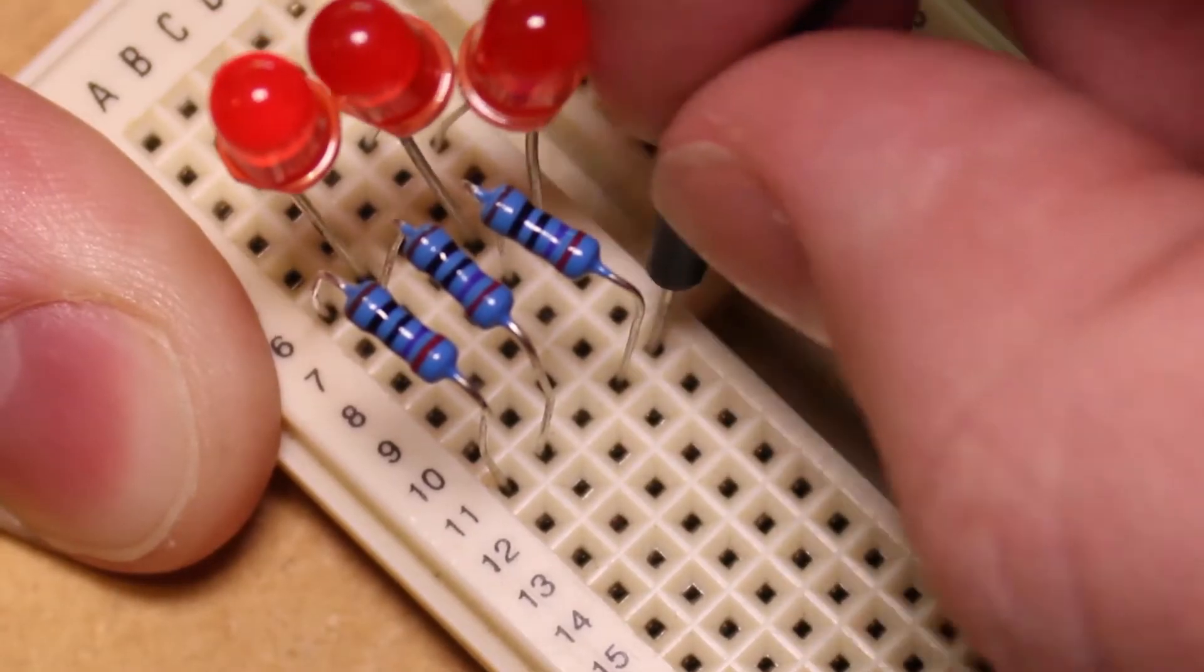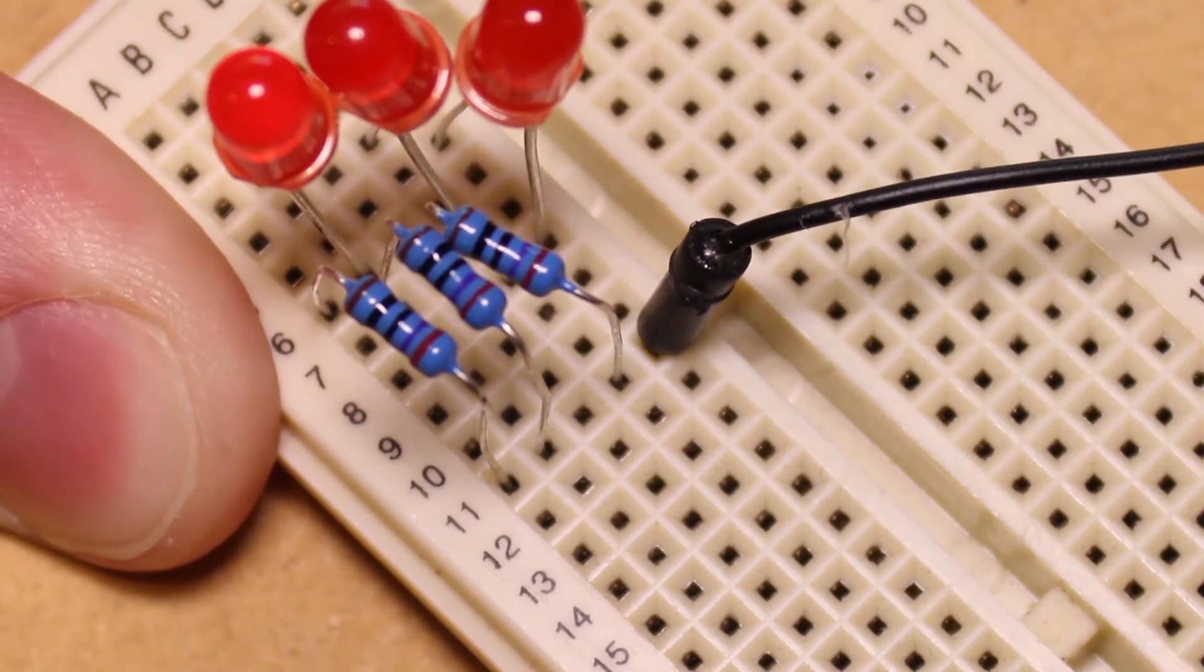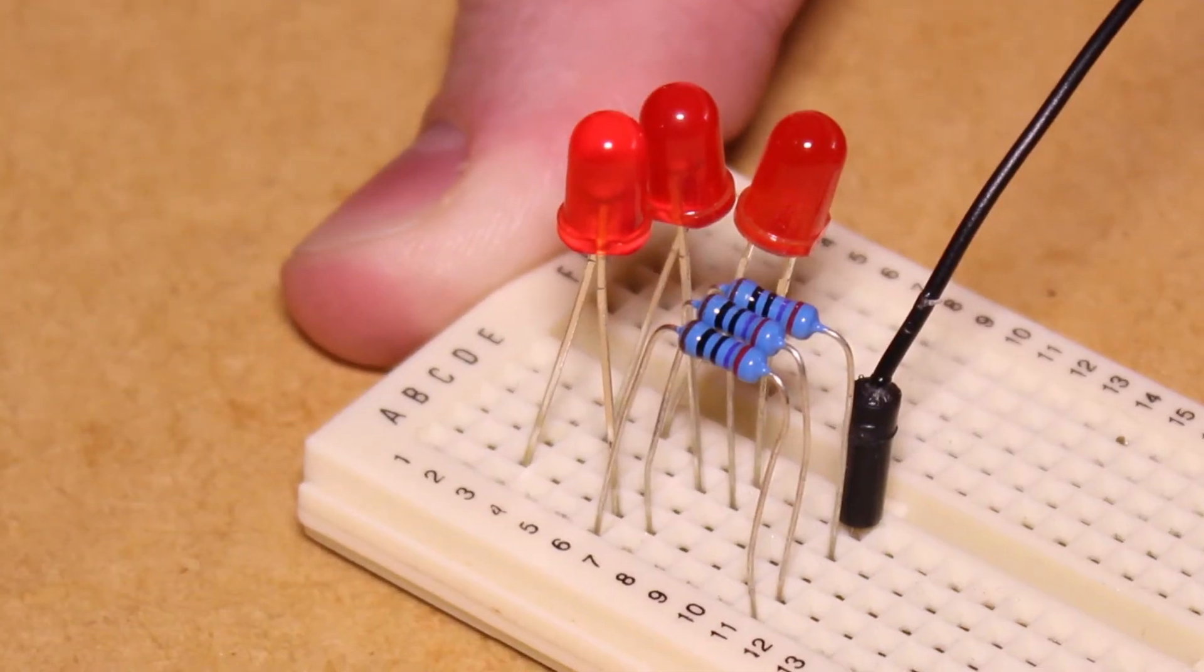I'm then going to insert a jumper wire into the ground rail and connect a jumper wire to each of the positive legs of the LEDs.